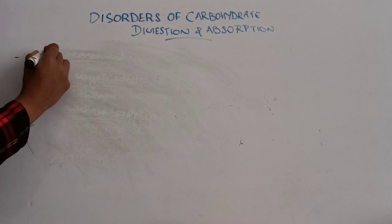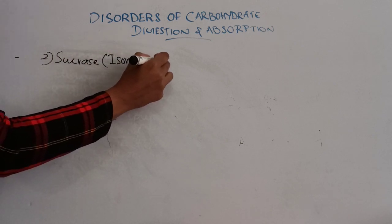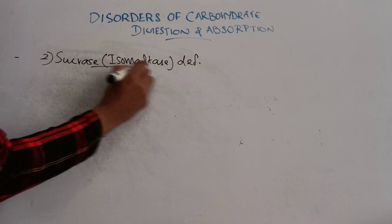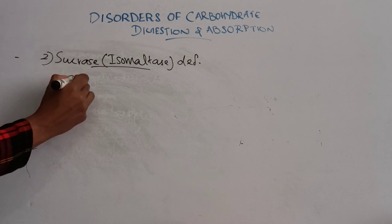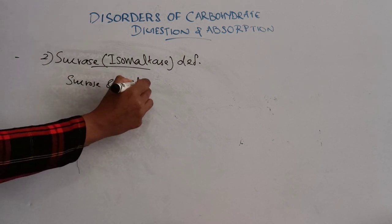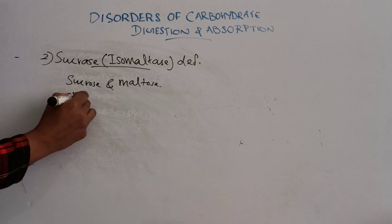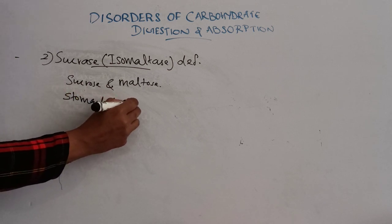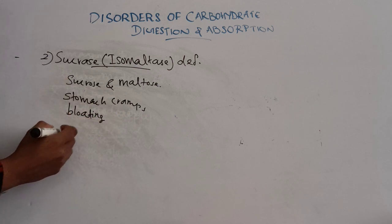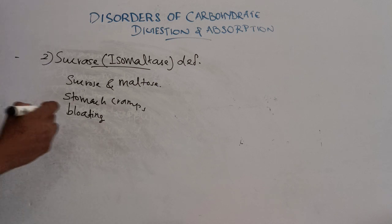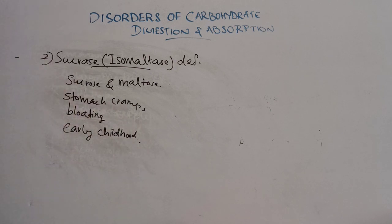Next one is sucrase or isomaltase deficiency. People with this condition cannot break down sucrose and maltose. This will cause stomach cramps, bloating, excess gas production, diarrhea, etc. The symptoms occur in early childhood. That is sucrase or isomaltase deficiency.